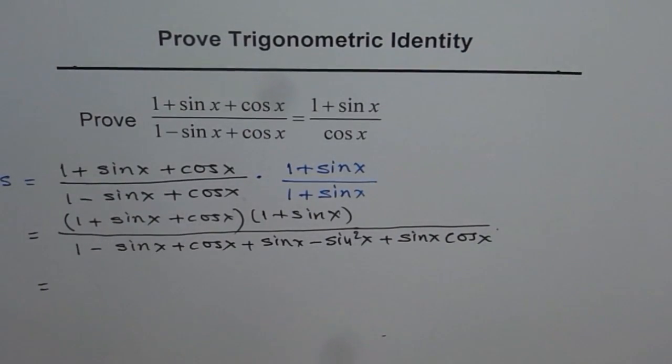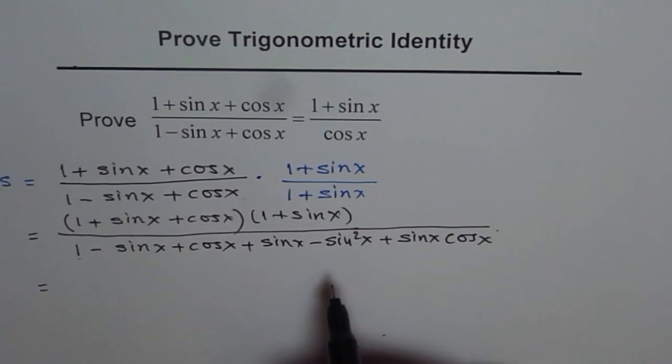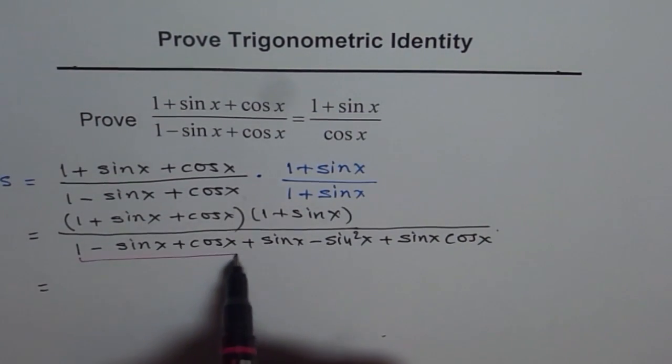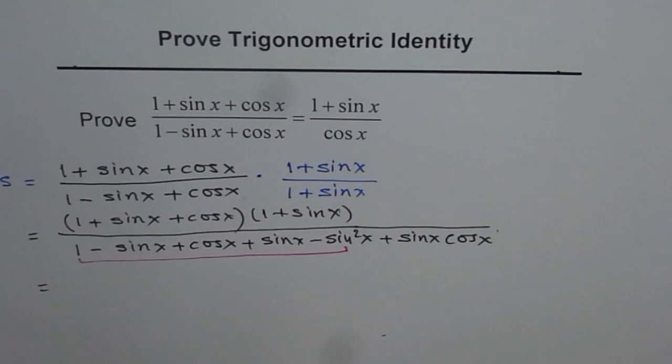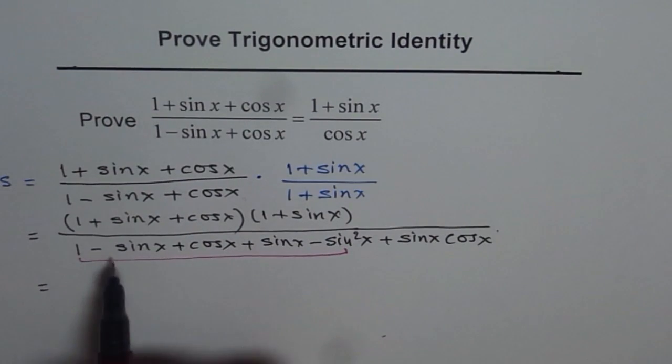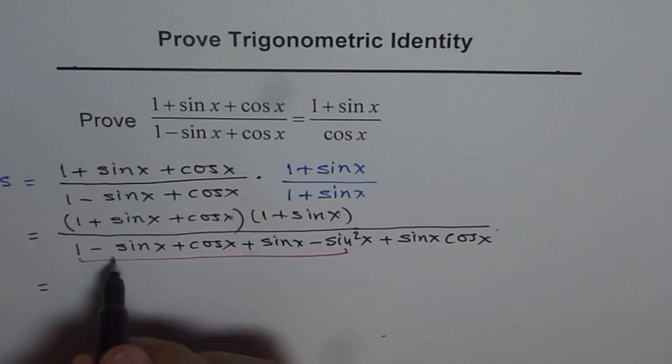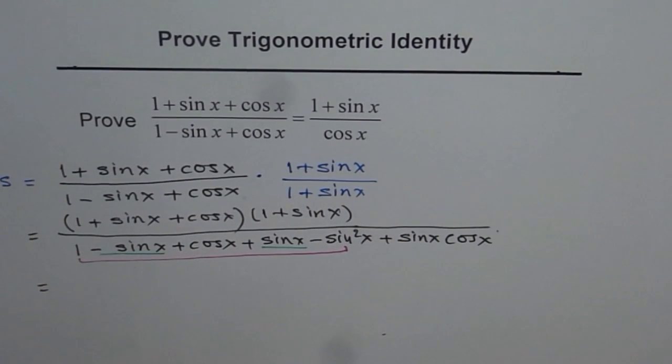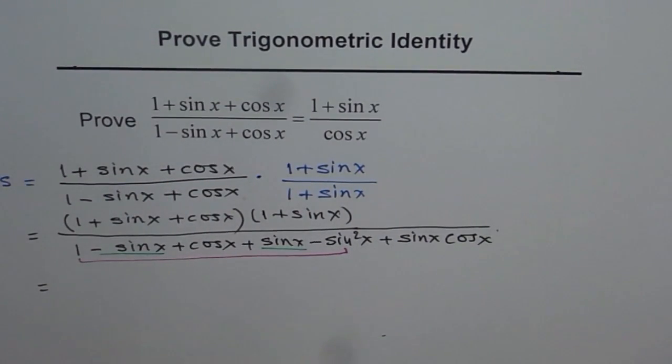As you can see from here, we have a term which is kind of 1 - sin² x, which could be written as cos² x. So we have this term 1 - sin² x which can be combined. Second thing, we have -sin x and +sin x, they can be cancelled out. So in the next step, we'll do these two things together.